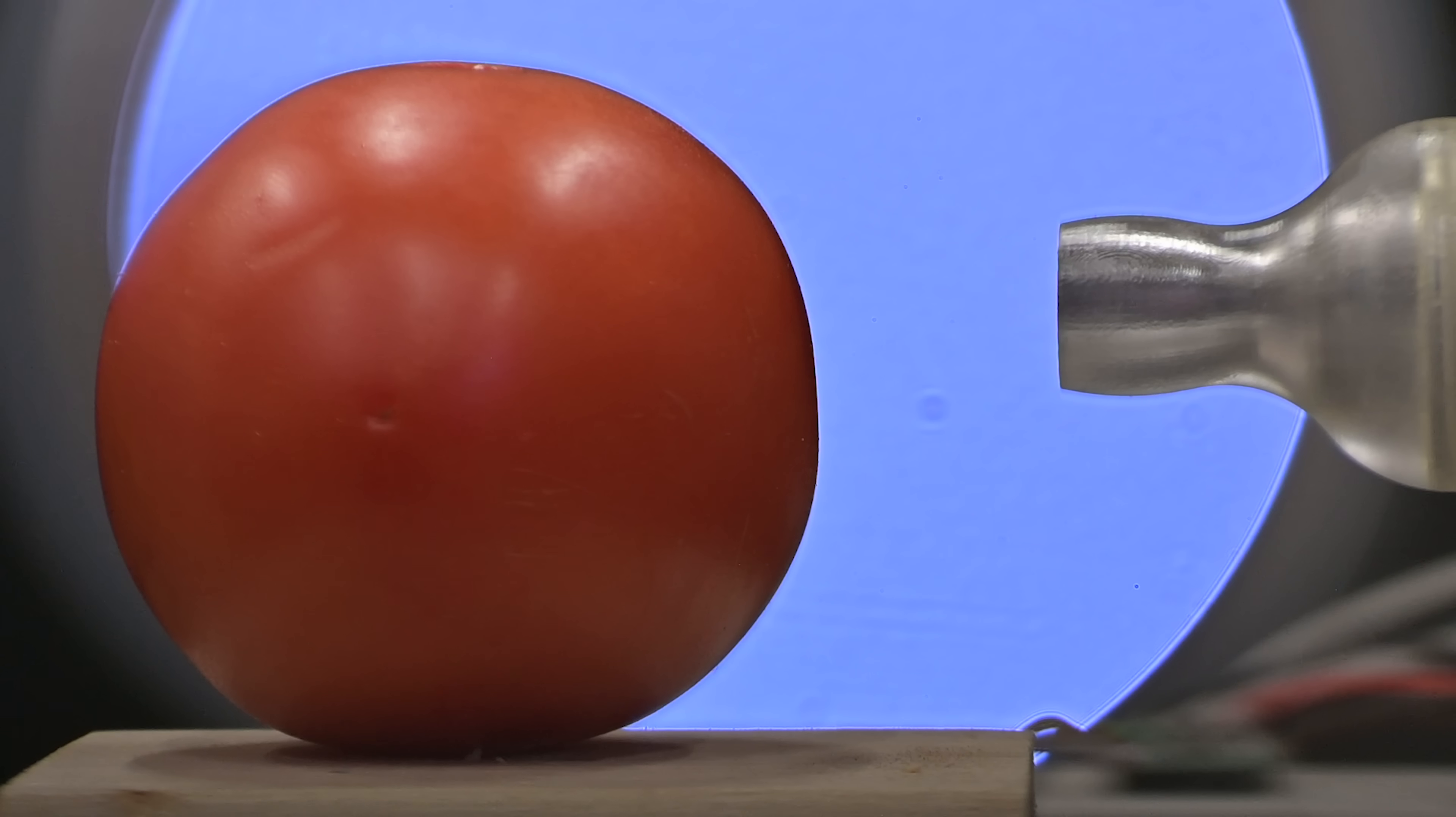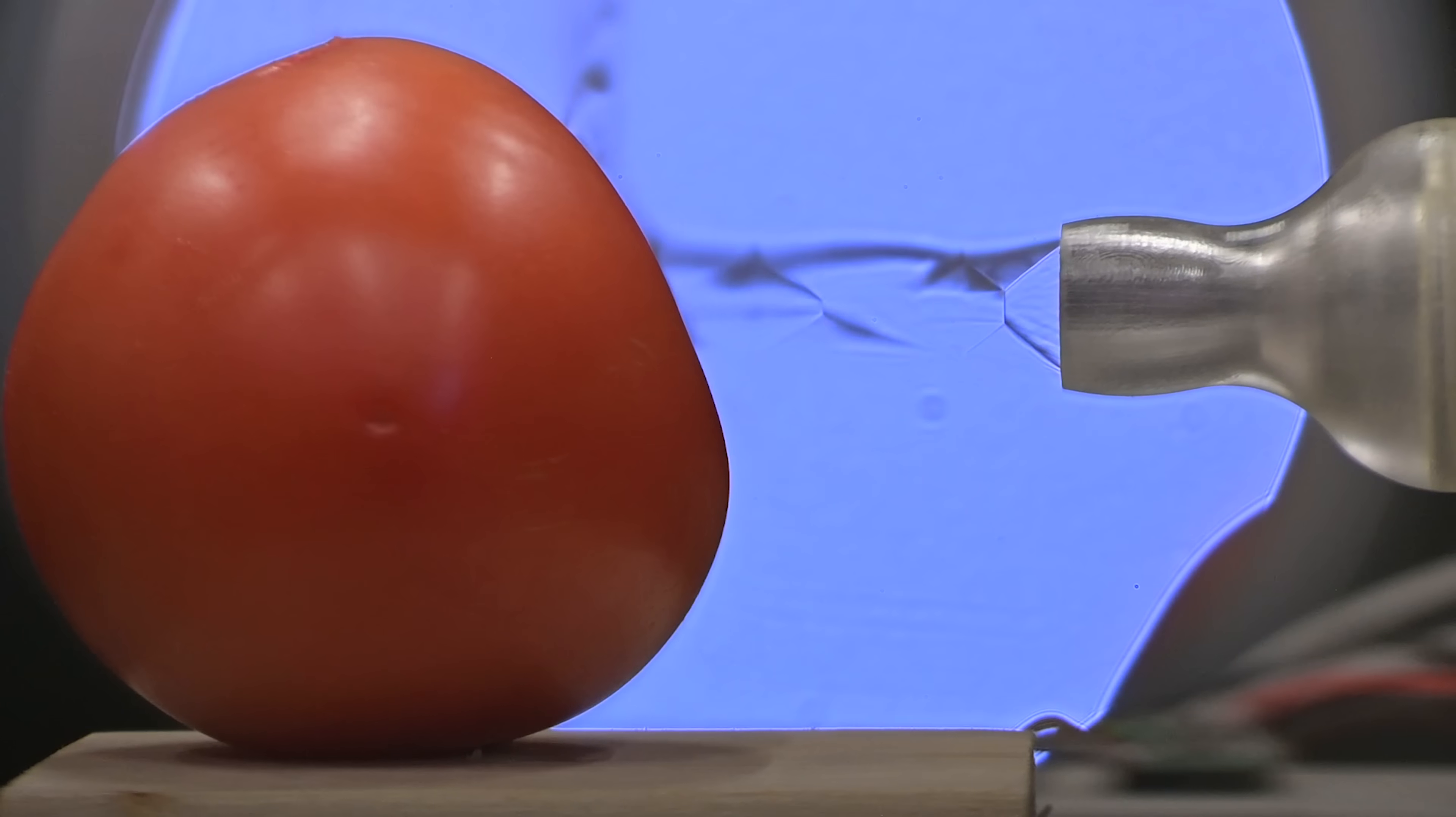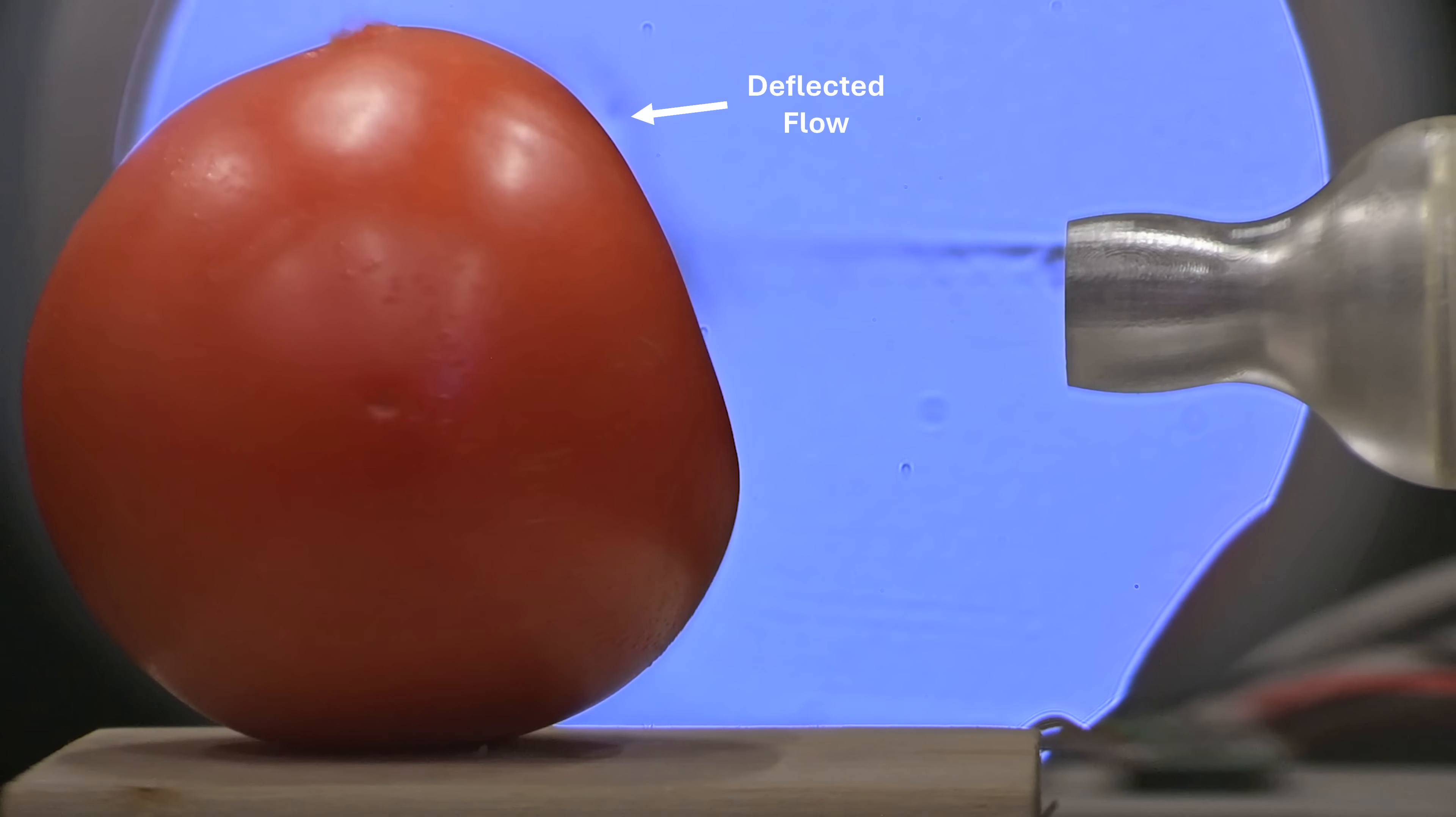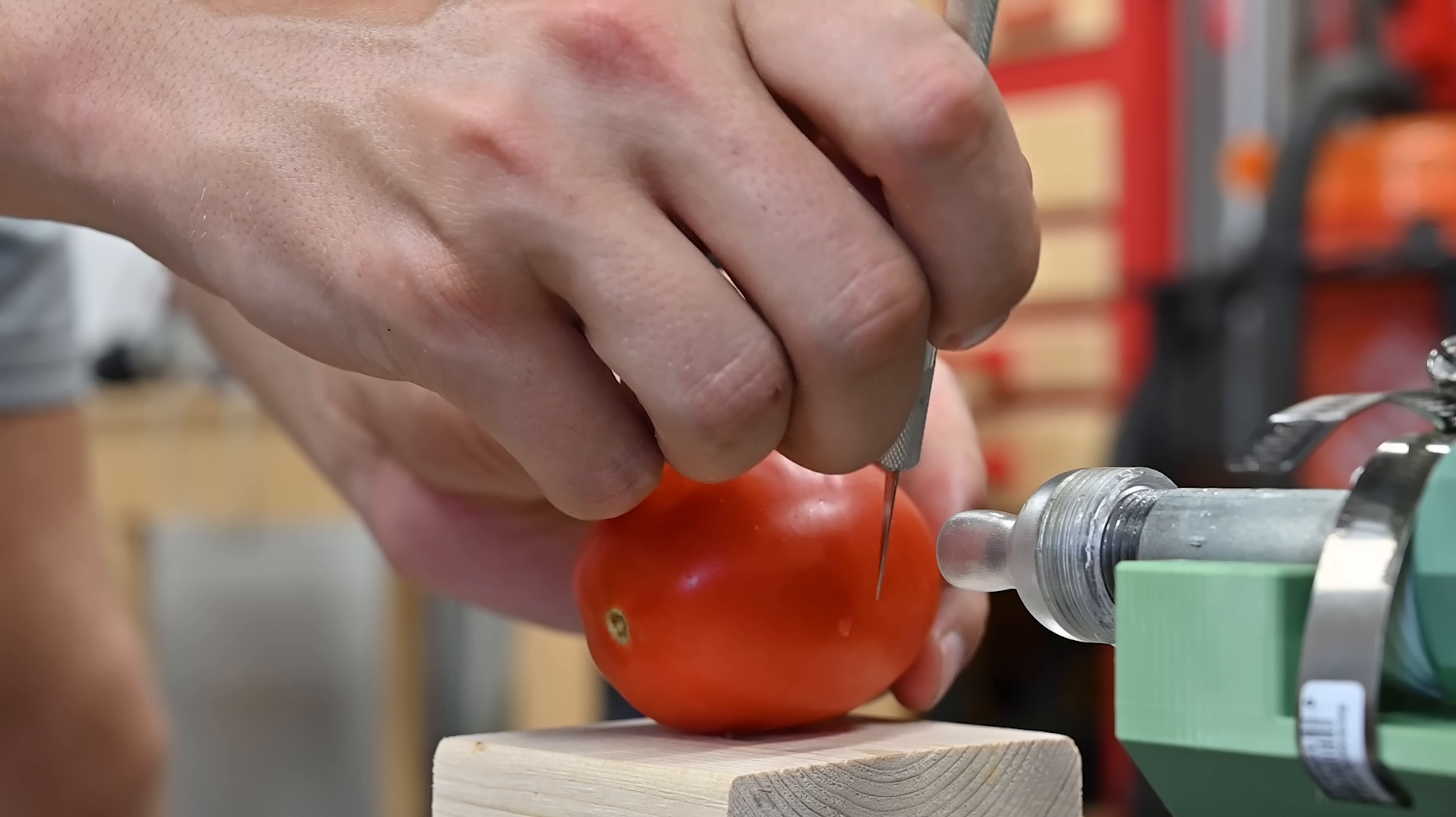Now, I of course recorded this in Schlieren too, and it's honestly one of the most amazing clips I've ever seen. You can see the shockwaves forming in the exhaust of the nozzle, and then they hit the tomato and actually deflect upwards. In the bit that's actually already reflected off the tomato, you can even see more shocks forming. This blew my mind when I saw it.